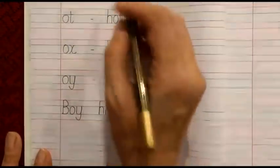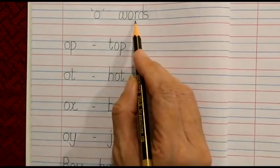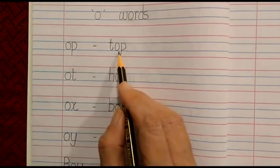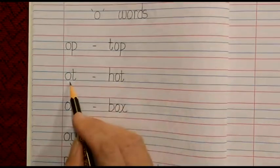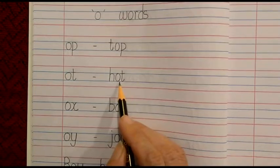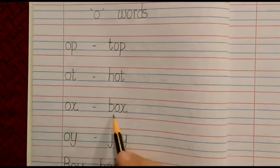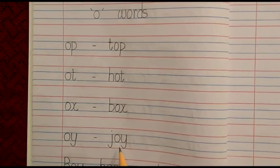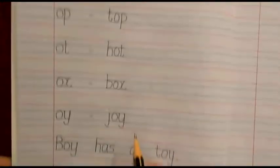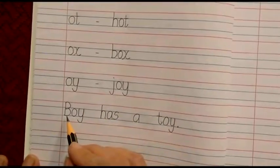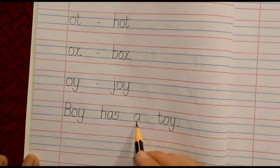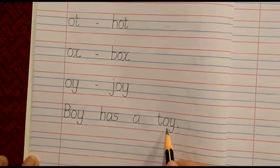Please let us read whatever we have written on this page. Words — please repeat after me. I am giving a pause so that you can repeat: Op, Top. Ot, Hot. Ox, Box. OI, Joy. Now we will read the sentence: Boy has a toy.